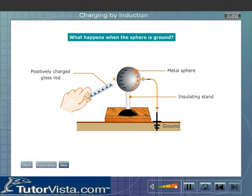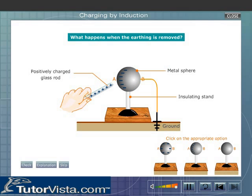If we ground the sphere, electrons flow from the earth into the metal sphere and neutralize the positive charges.